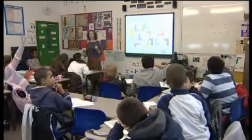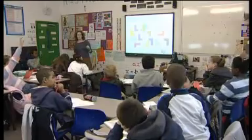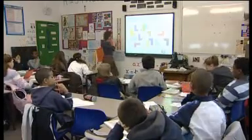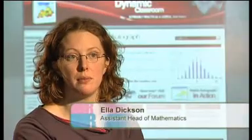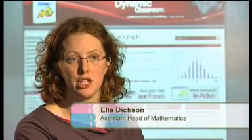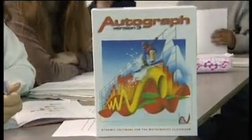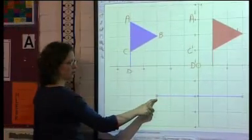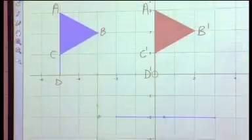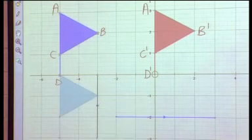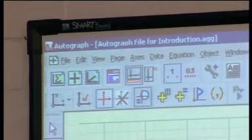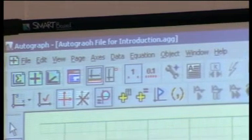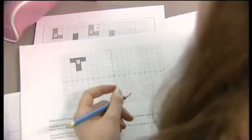In my lesson today with Year 7, I've been using Autograph to give me a graph background on which I've drawn shapes. And I've used the software to translate the shapes with vectors to teach the children about moving 2D shapes. There's also statistics software — drawing statistics graphs as well as line graphs. It's a very big piece of software, but a lot of it is very user-friendly.